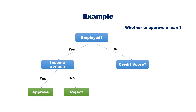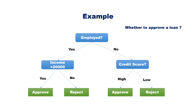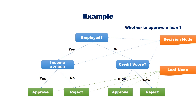If the person is not employed, we will check his credit score. If the credit score is high, approve the application; otherwise reject the application. The final tree has three decision nodes and four leaf nodes. We have built a decision tree from the training set so that given a new applicant, you can find out whether to accept or reject the loan application.